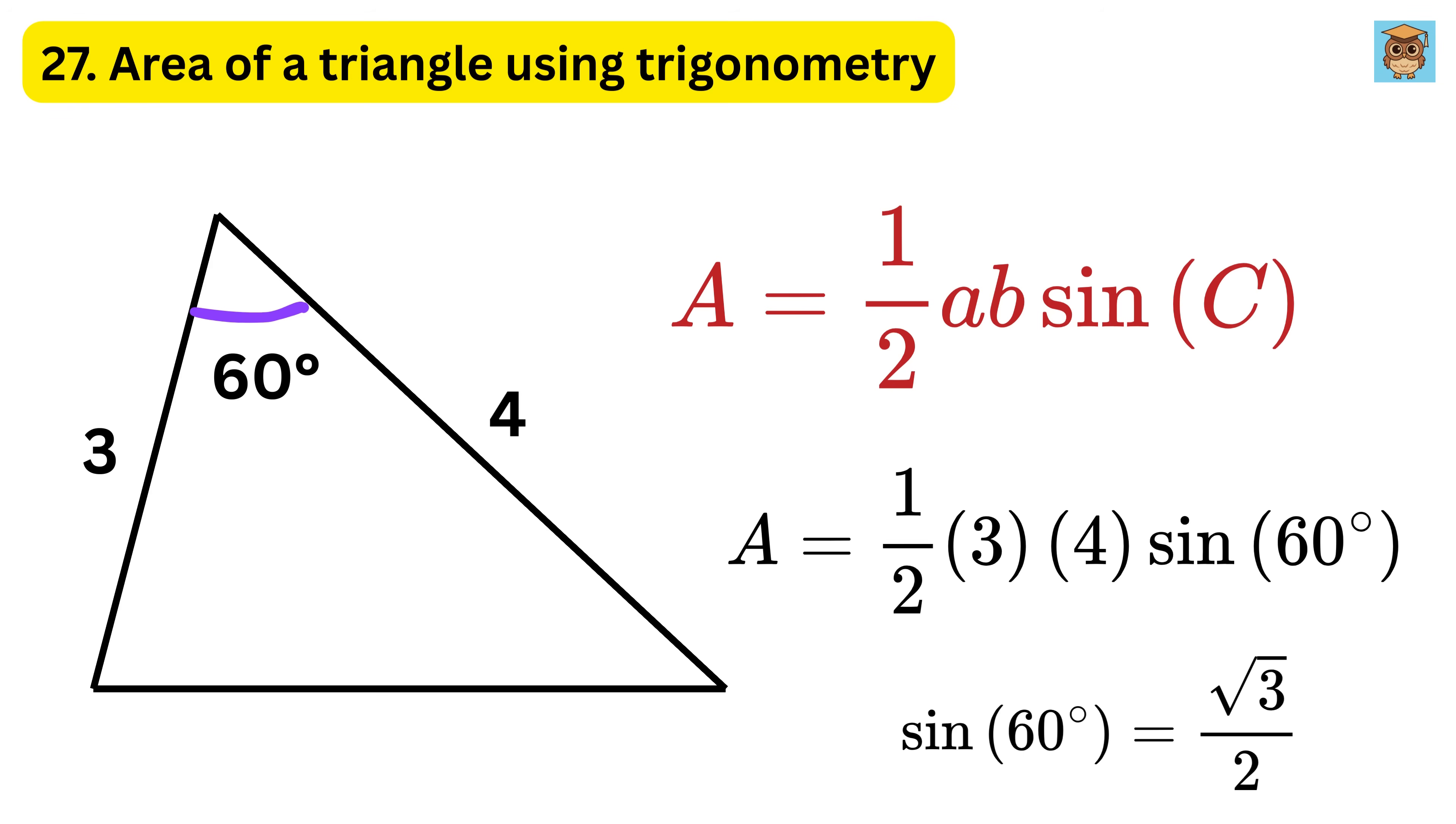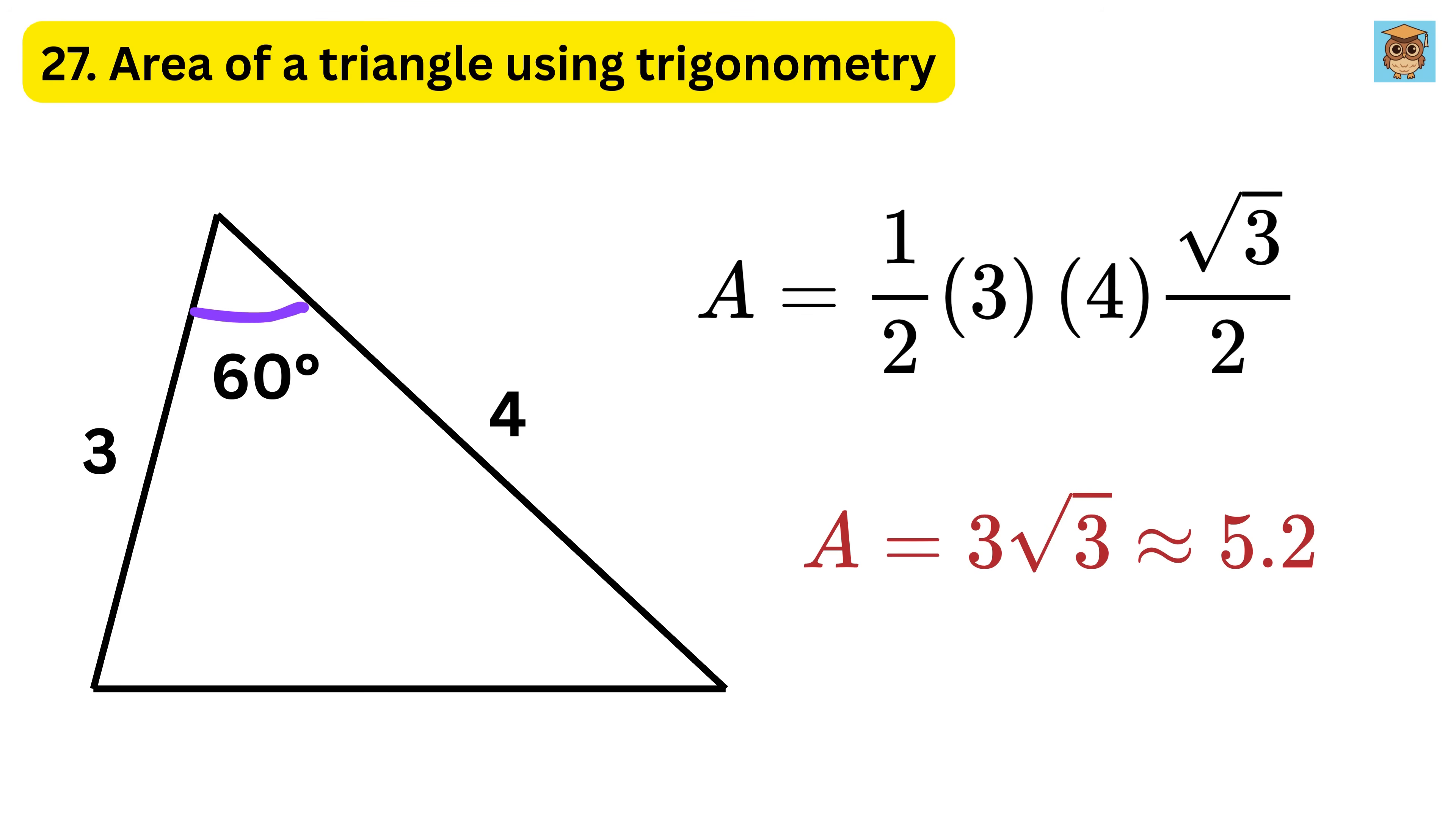Since sine 60 is square root of 3 divided by 2, the expression becomes one half times 3 times 4 times square root of 3 divided by 2, which comes out to about 5.2 square centimeters. This method is especially helpful when you know two sides and the angle between them, but not the height.